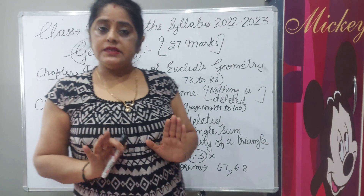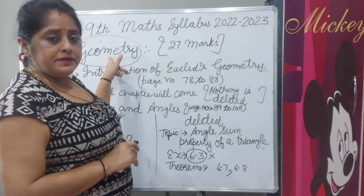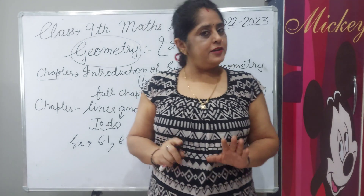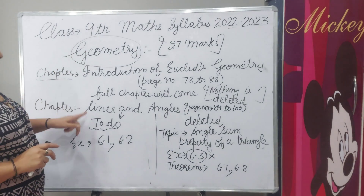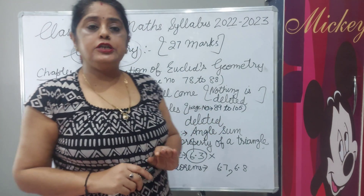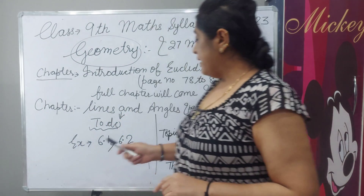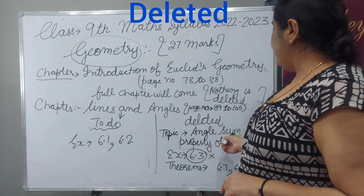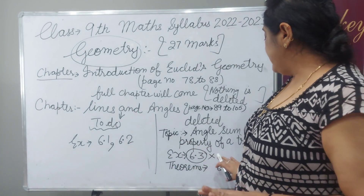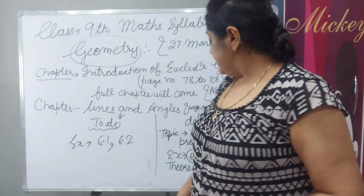Geometry carries full 27 marks. Chapter introduction to Euclid's geometry is up to page number 78 to 88 — this chapter will fully come and nothing is deleted. Next chapter is lines and angles, page number 89 to 105. You have to do exercises 6.1 and 6.2. What is deleted: the topic angle sum property of a triangle, meaning exercise 6.3 with examples is deleted, along with theorems 6.7 and 6.8.